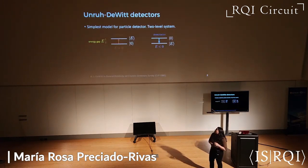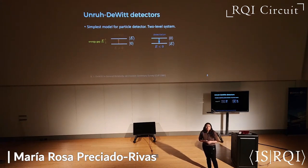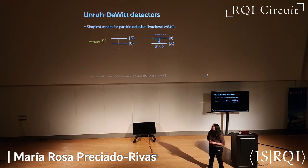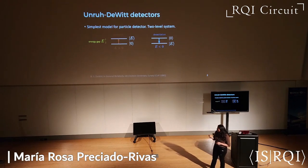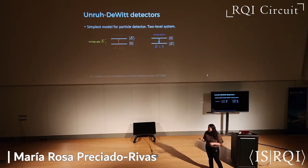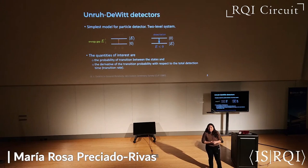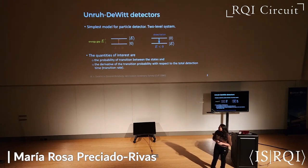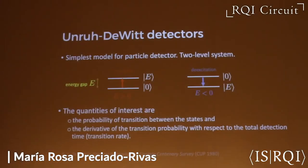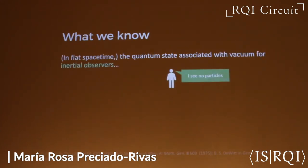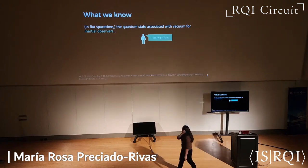The simplest model for particle detectors is the Unruh-DeWitt model, which is a two-energy-level system that undergoes transitions between its ground and excited state. The quantities that we are interested in calculating are the probability of the transitions between these states and the derivative with respect to the total detection time of this probability, which is known as the transition rate.